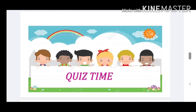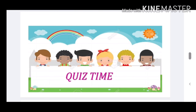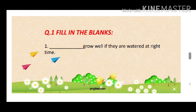We have revised the whole lesson, and now it's quiz time. I have prepared some questions and activities. I want you all to hold a pen and have a notebook in front of you. I am going to ask some interesting questions about this chapter and I want you all to answer them sincerely. Question number one: fill in the blanks. First: dash grow well if they are watered at the right time.